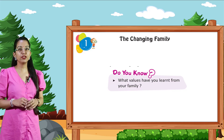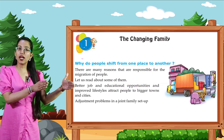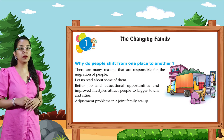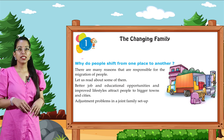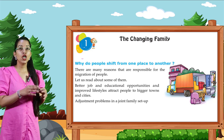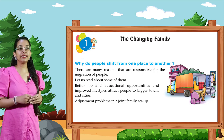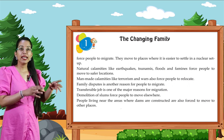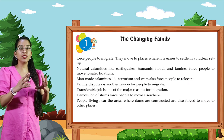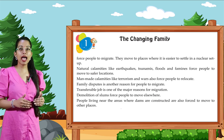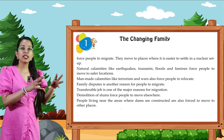Do you know what values you have learned from your family? Why do people shift from one place to another? There are many reasons responsible for the migration of people. Let's read some of them. Better job and educational opportunities and improved lifestyles attract people to bigger towns and cities. Adjustment problems in a joint family setup force people to migrate. They move to places where it is easier to settle in a nuclear setup. Natural calamities like earthquakes, tsunamis, and floods force people to move to safer locations.